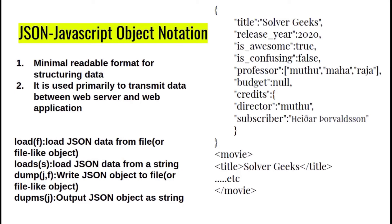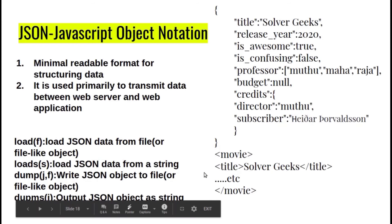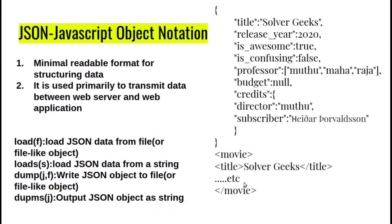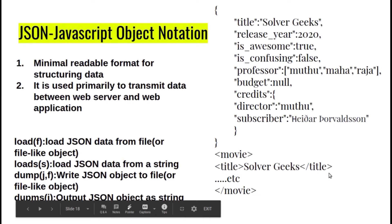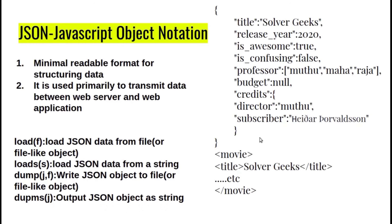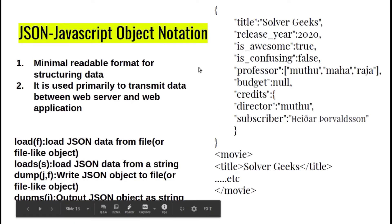If you look at the JSON format compared to the XML format — if you look at the XML format, that is the structure of the XML format. It is complex. The tags are closed and it is complex. If you look at the JSON format, it is simple, neat, and easy to understand. This is the XML format.